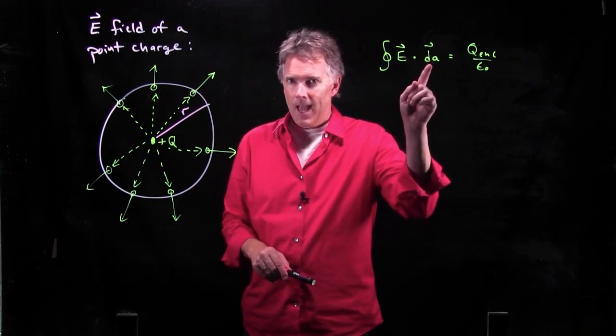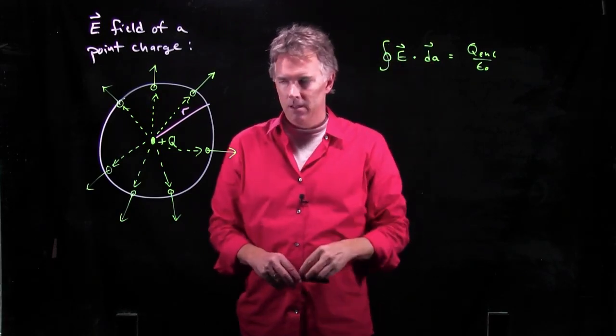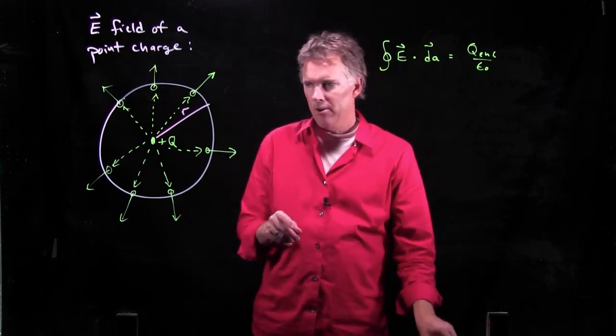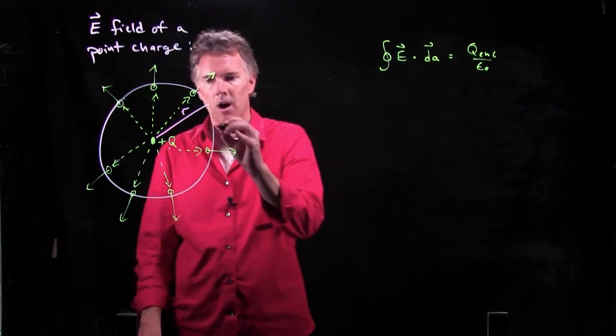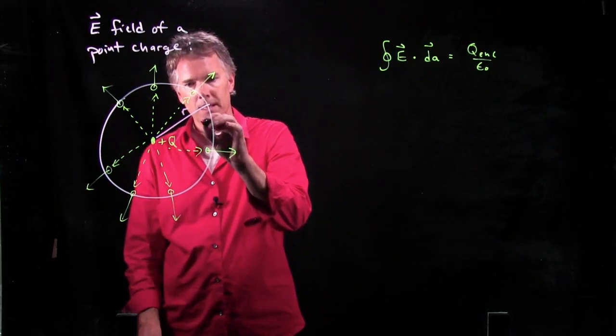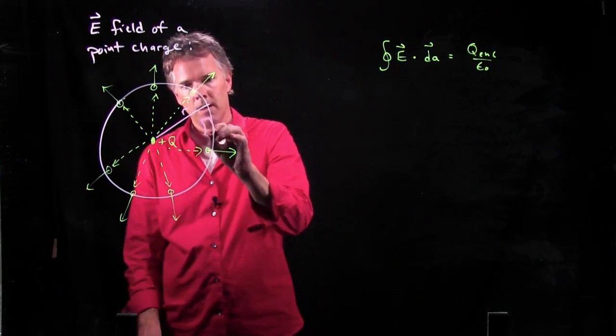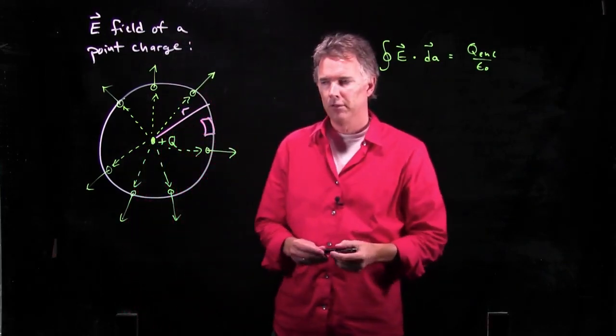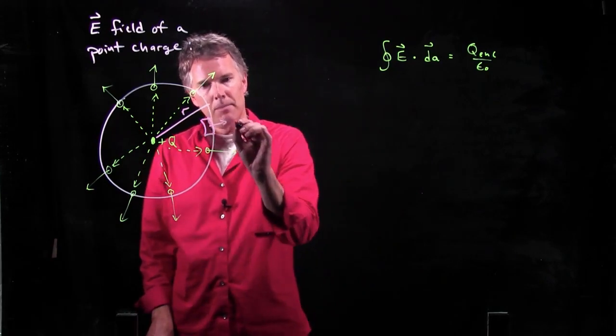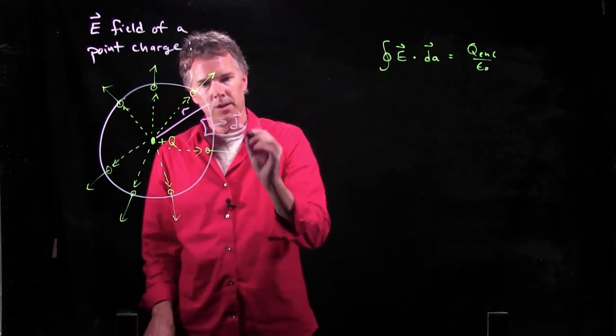We also need to think about dA. What is dA in this case? dA is a surface area element of the sphere. So if I think about the dA, it's a little slice of surface area that looks like that. Okay?